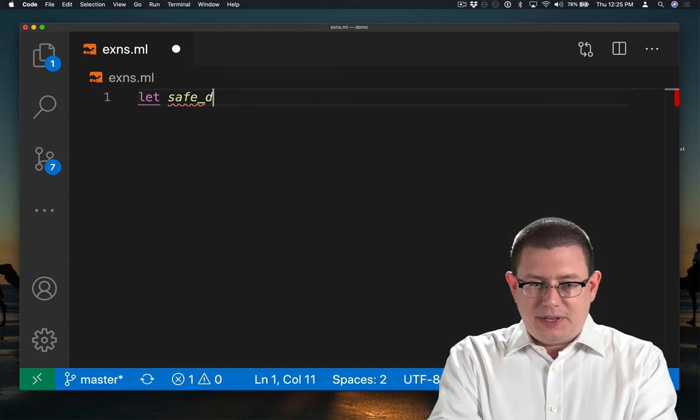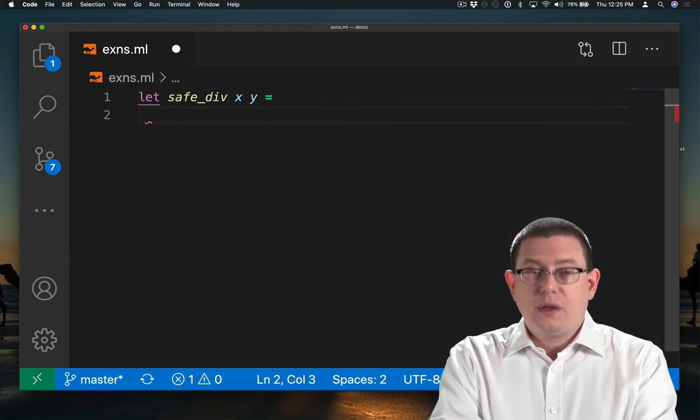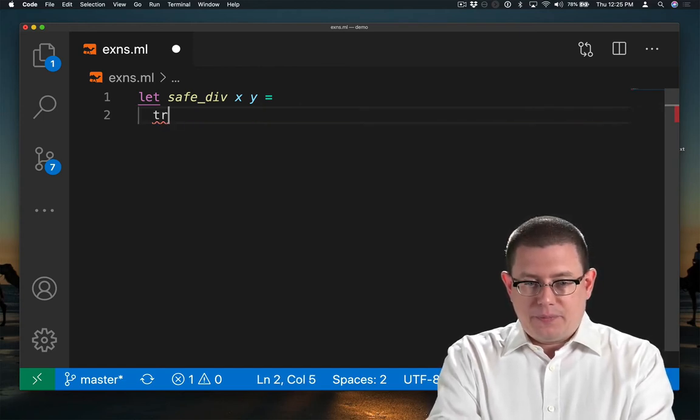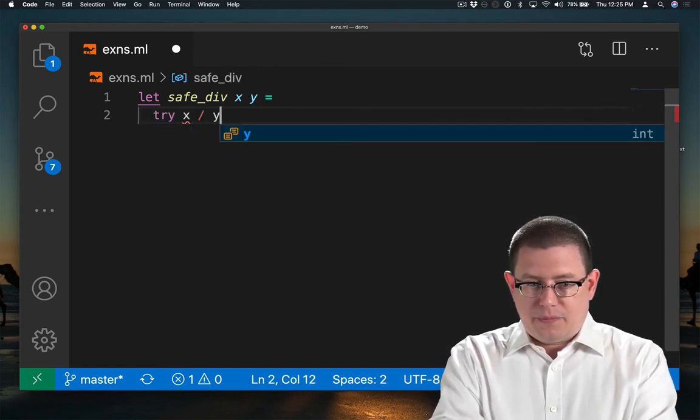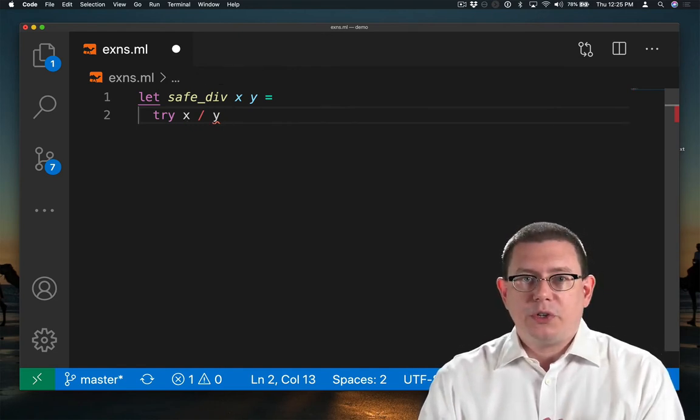Well, we could say let safe div of x and y be, we will try to evaluate x divided by y. If that succeeds, the value of x divided by y will be returned.